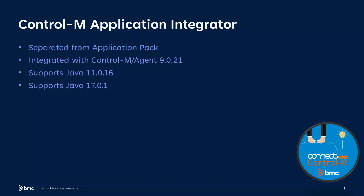Thank you for the introduction. Today we'll look at the Control-M Application Integrator version 9.21, focusing on a common scenario: the need to update the Java package the Application Integrator uses. With the release of Control-M 9.21, the Application Integrator has been separated from the application pack and is now integrated with the Control-M agent installation, streamlining the update process. The Application Integrator is compatible with Java 11 and 17, specifically from minor versions 11.0.16 and 17.0.1 onwards. My current setup uses Java 11, and today we'll go through the process to update it to Java 17.